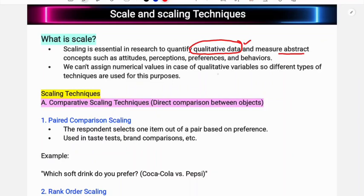We cannot assign numerical values in case of qualitative variables, so different types of techniques are used for this purpose. If we use qualitative variables, we can use different types of techniques to measure them. We can use scaling techniques to handle qualitative data.